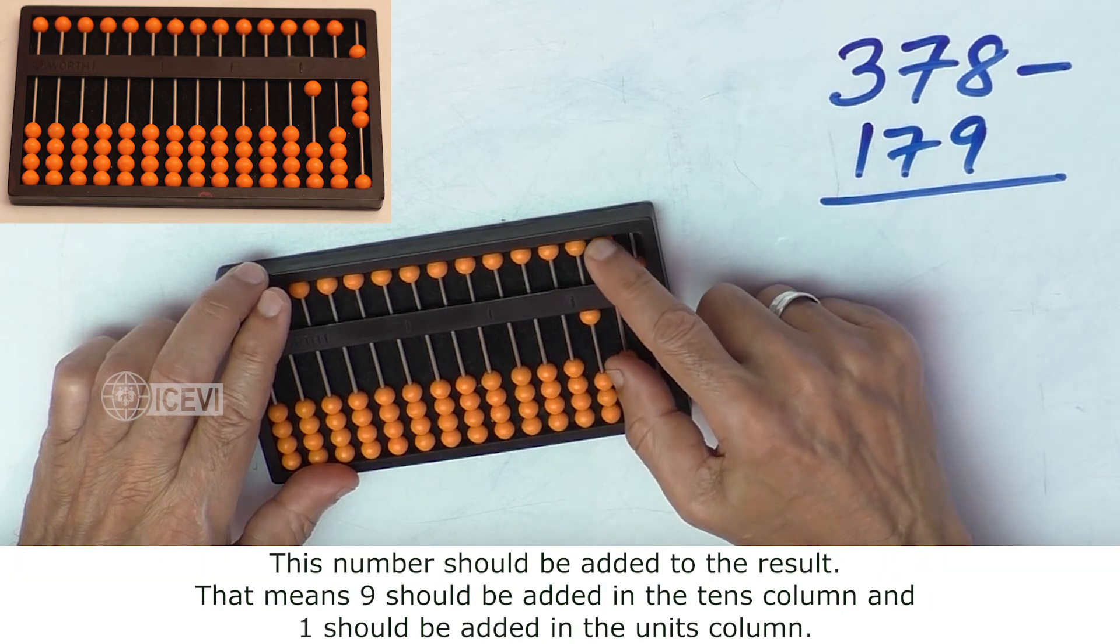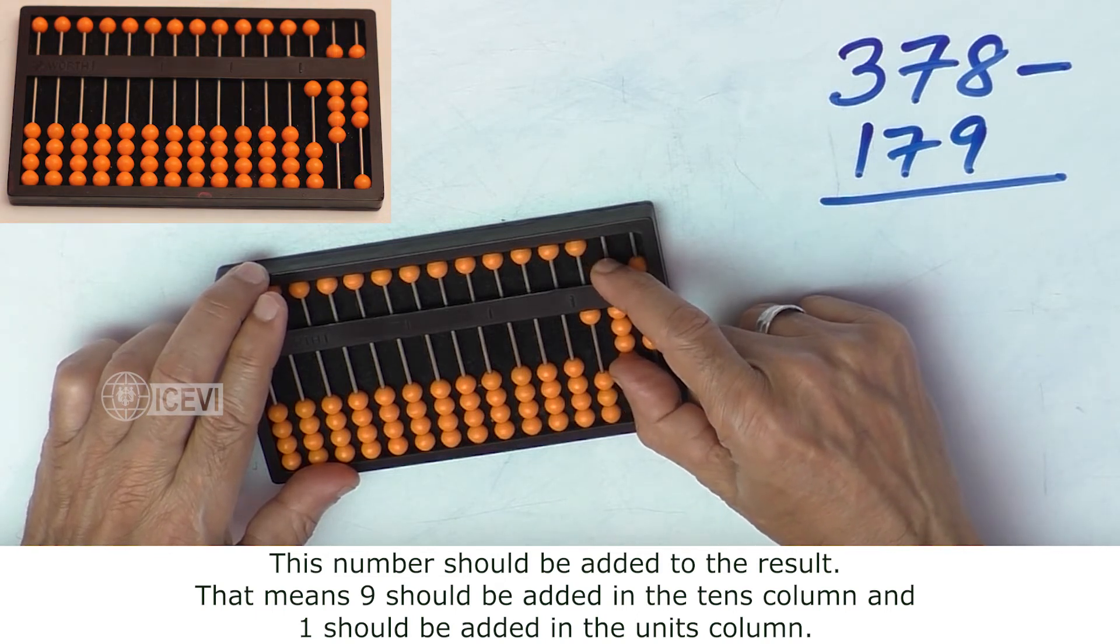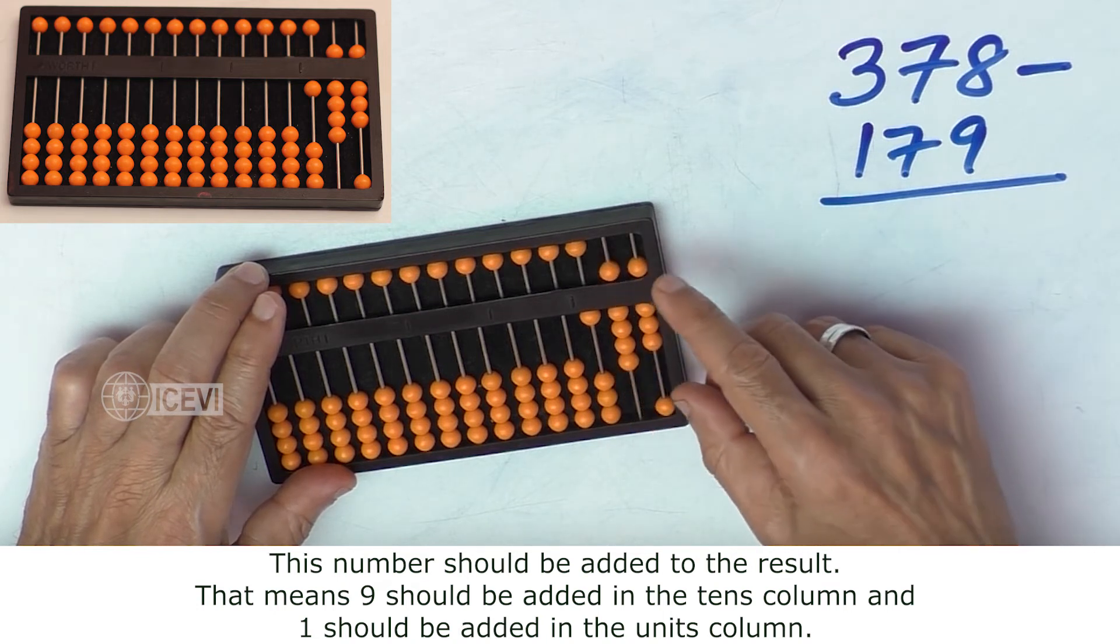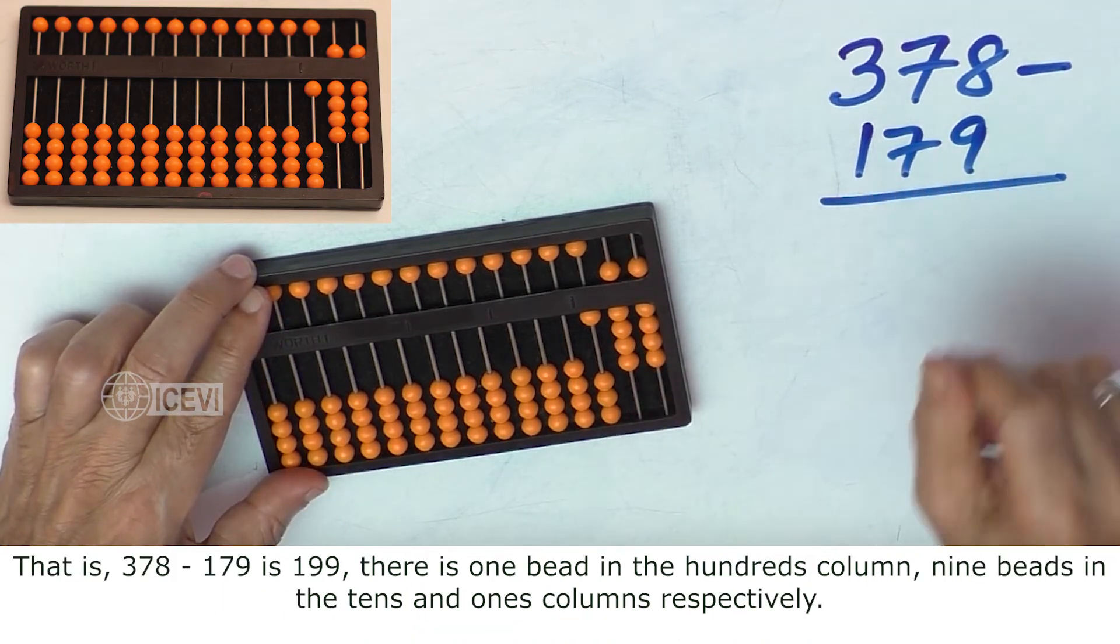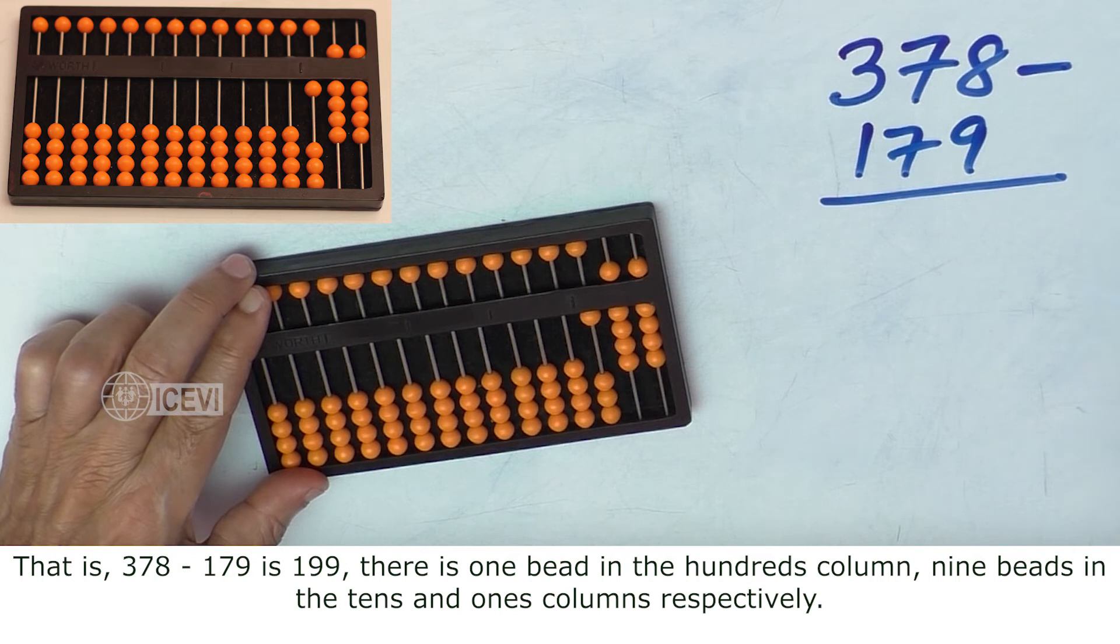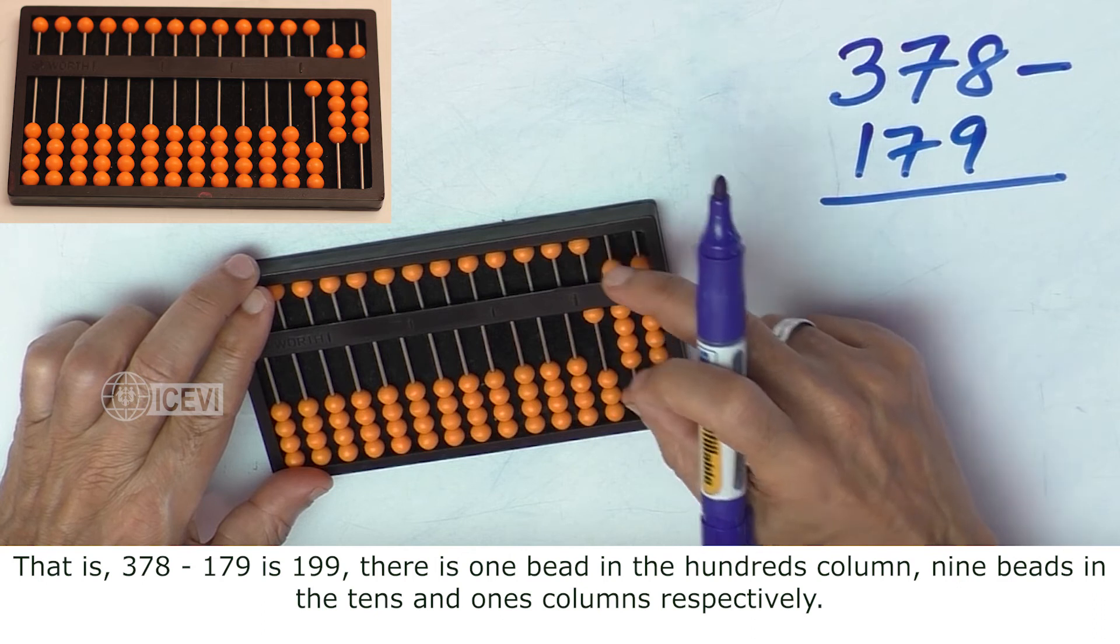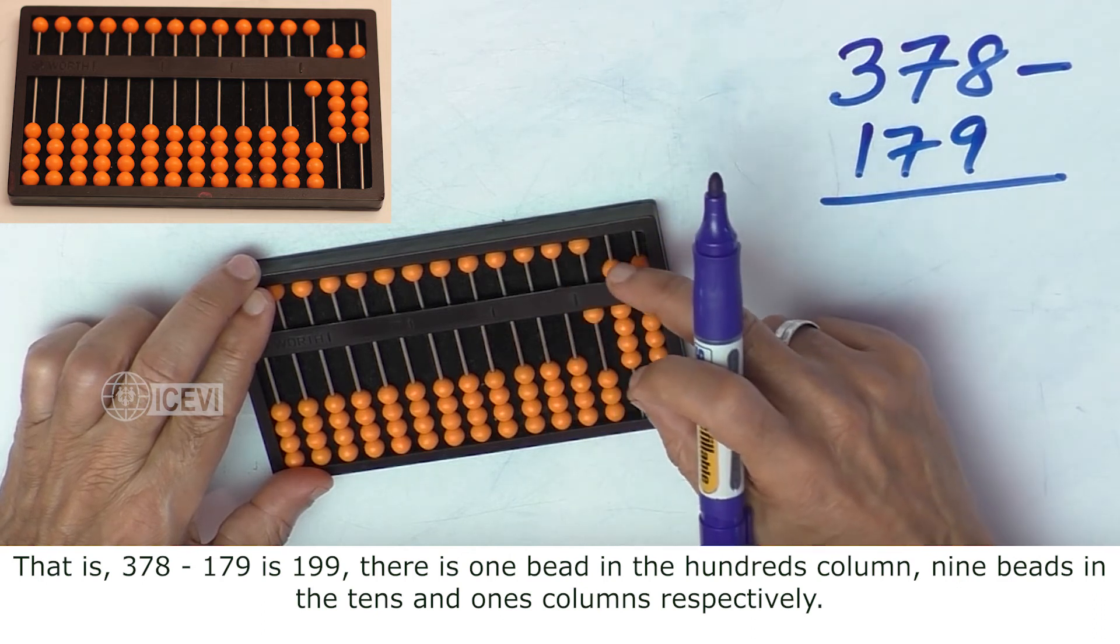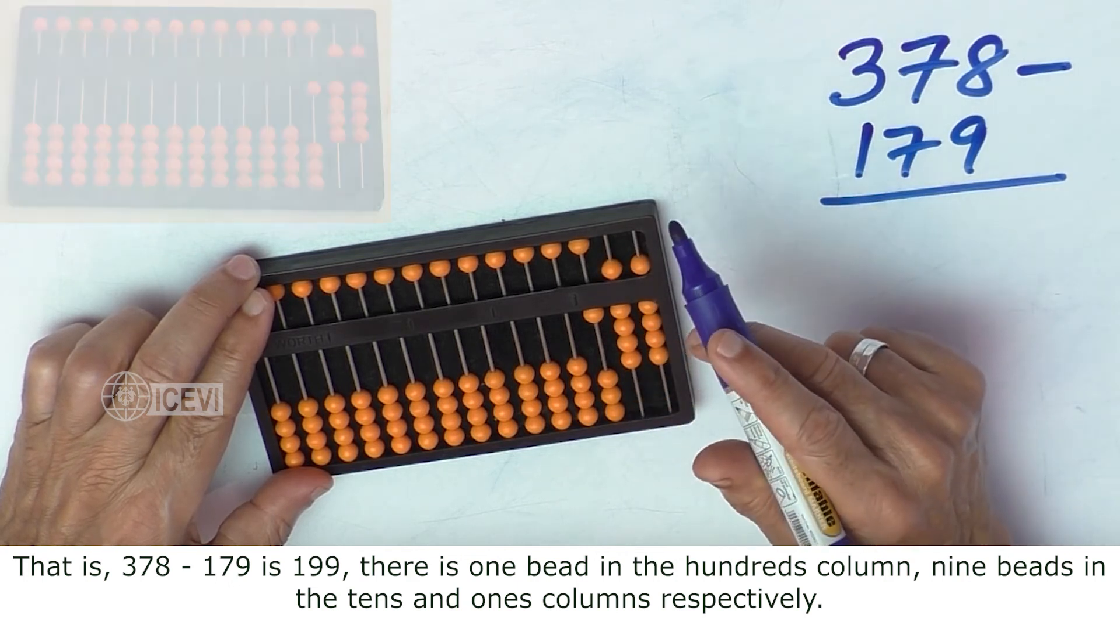This number should be added to the result. That means you have to add 9 in the tens column and 1 in the units column. That is 378 minus 179 equals 199. There is 1 bead in the hundreds column, 9 beads in the tens column, and 9 beads in the units column.